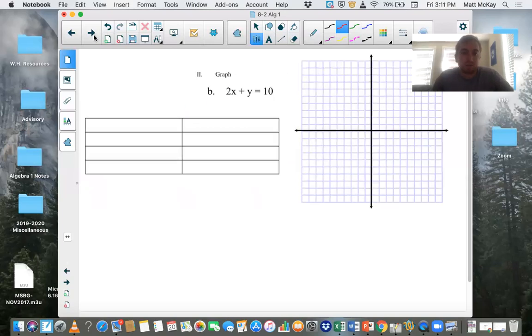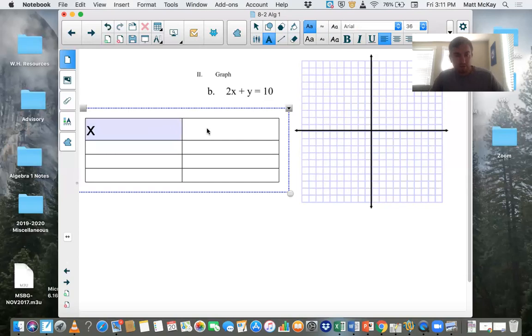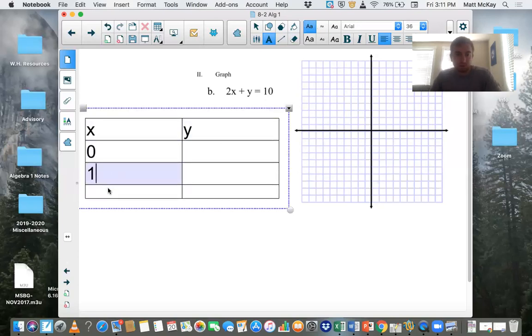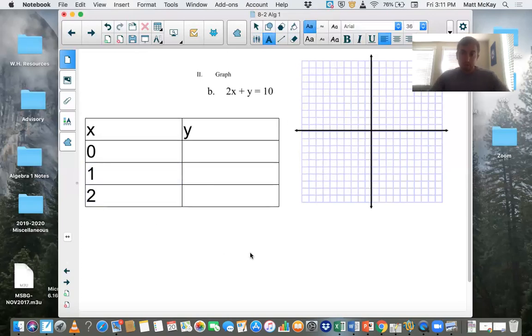Okay, let's try the next problem here. We have 2x plus y equals 10. Again, let's make a chart here. We have x and y values. You can plug in any numbers you want. Let's say if we plug in again, zero, one, and two. Zero, one, and two.